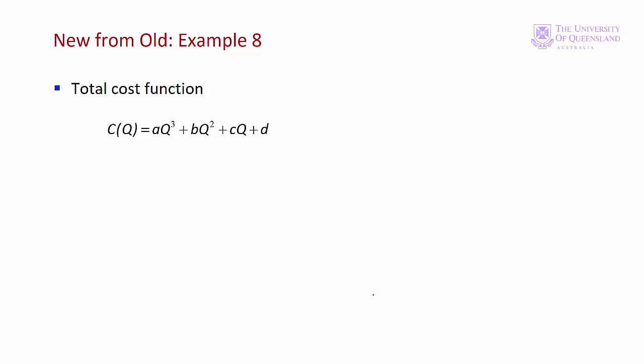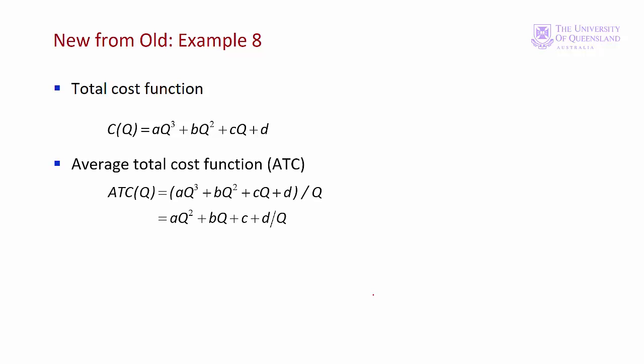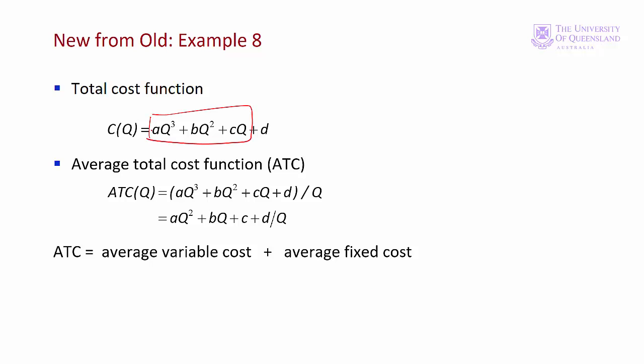From a total cost function, we can get an average cost function by dividing through by q, which tells us the average cost of production as q changes. Costs can be broken up into variable costs and fixed costs. Variable costs depend on q; fixed costs don't. Fixed costs occur in the short run — costs like rent and insurance — that have to be paid whether or not the firm is producing any output. So we can have average variable costs and average fixed costs. The average total cost is the sum of a quadratic function and a hyperbolic function.